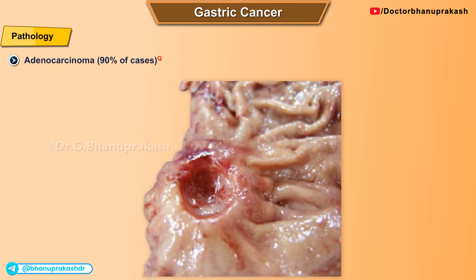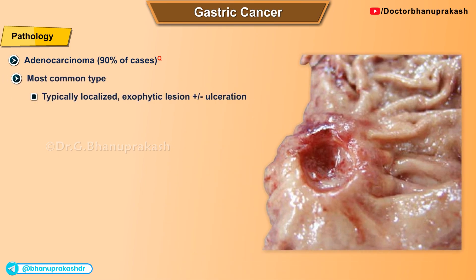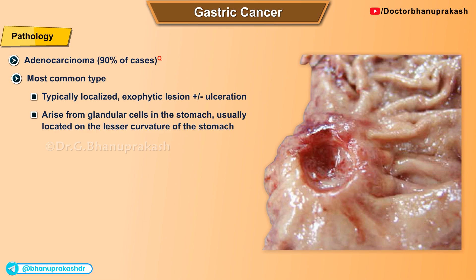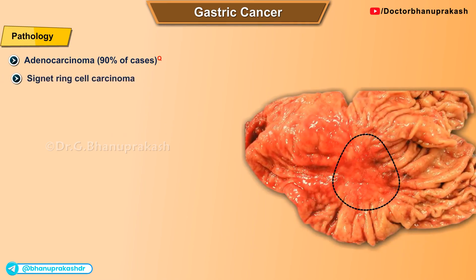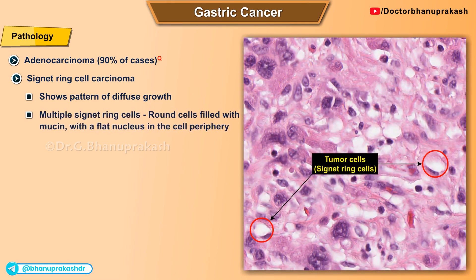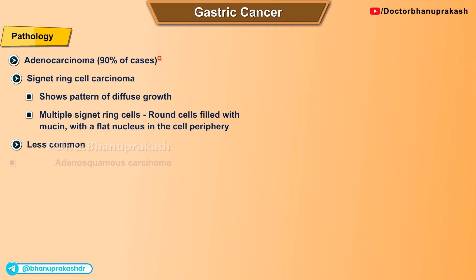The most common pathological type is adenocarcinoma in 90 percent of cases, typically a localized exophytic lesion with or without ulceration, arising from glandular cells in the stomach, usually located on the lesser curvature. Signet ring cell carcinoma shows a pattern of diffuse growth with multiple signet ring cells — round cells filled with mucin with a flattened nucleus at the cell periphery. Less common types are adenosquamous carcinoma and squamous cell carcinoma.